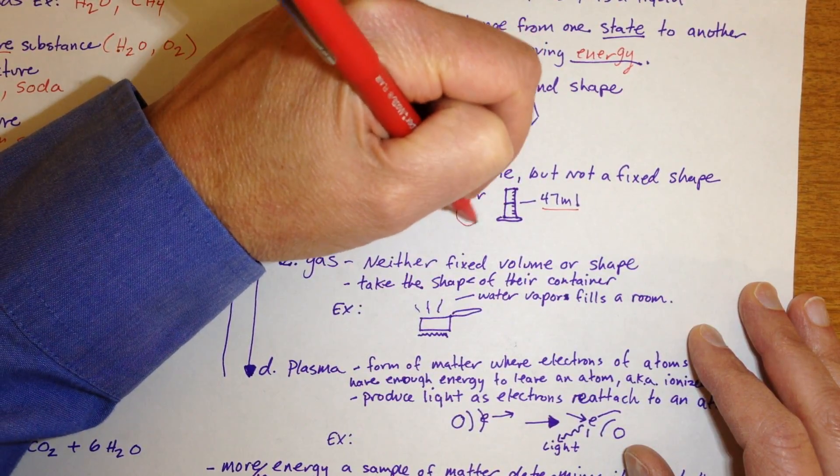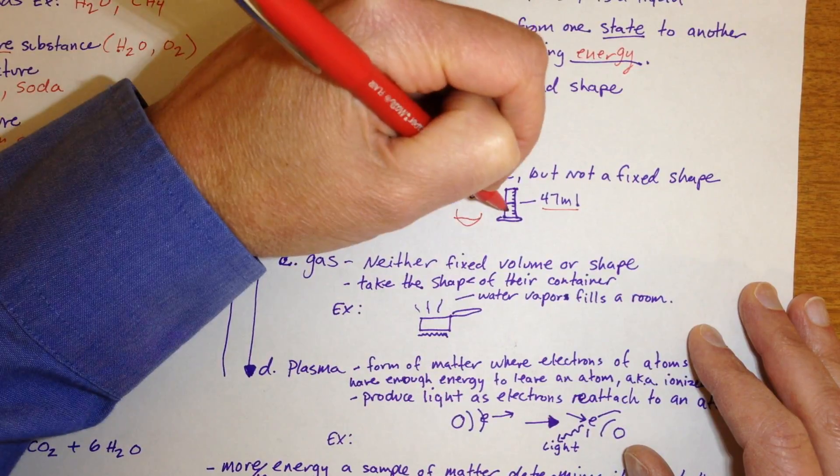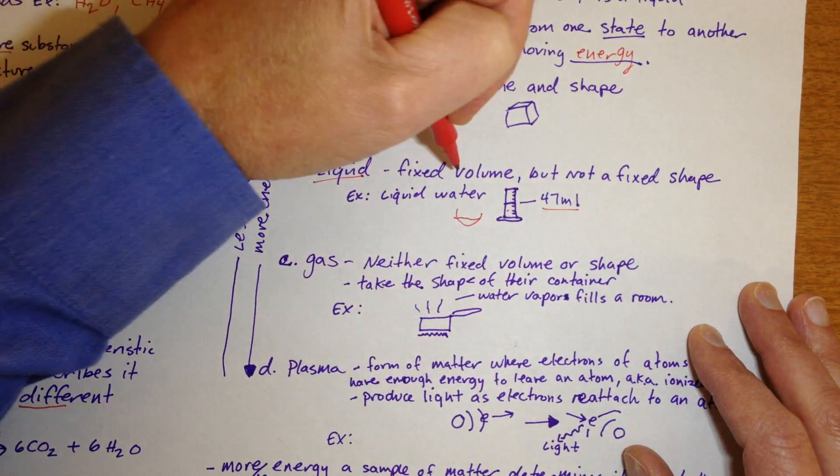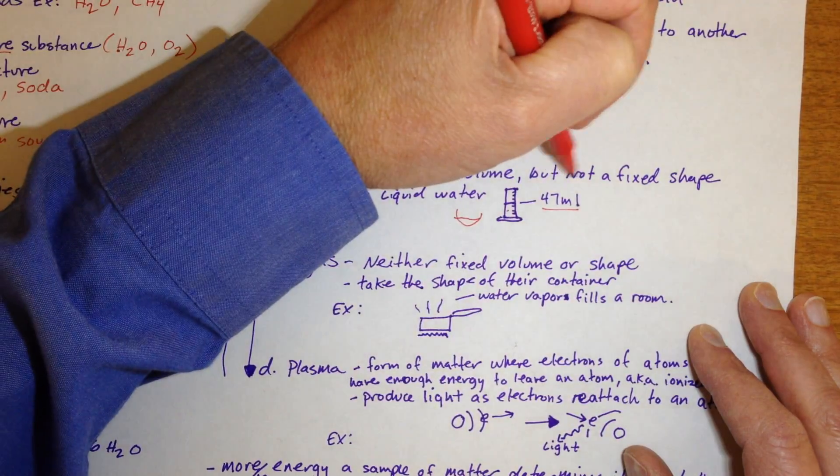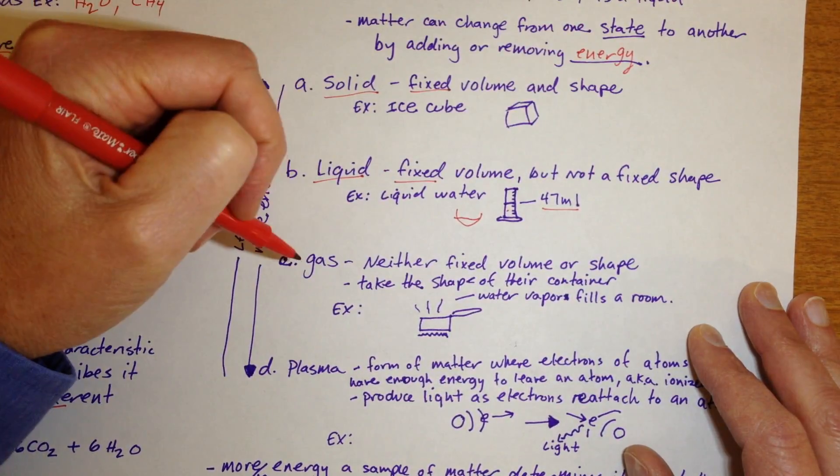If this water was poured into a little bowl, it would take that shape instead of this shape. So a liquid has a volume that doesn't change. That's what fixed means. But its shape can change.